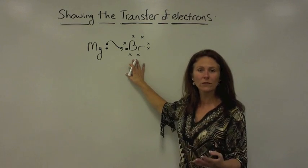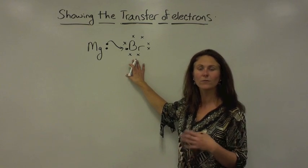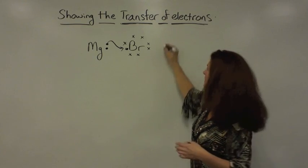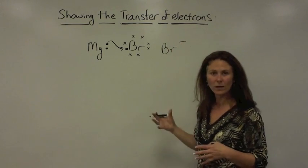But then it will have reached its octet, having eight valence electrons, and it is now much more happy and stable as a negative one ion.